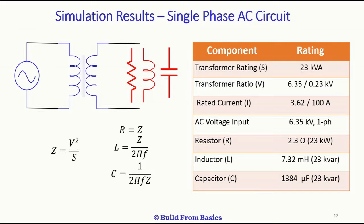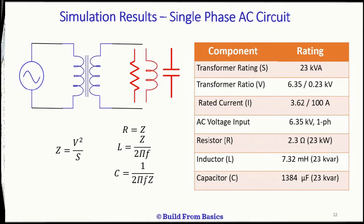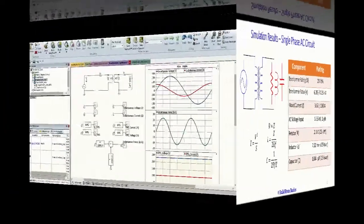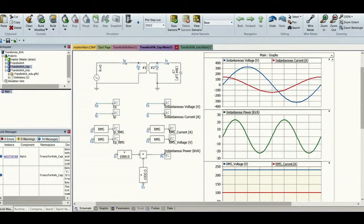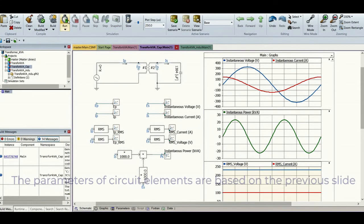The impedance Z = V²/S, where V = 230 V and S = 23 kVA. Then R = Z, L = Z / (2πf), and C = 1 / (2πfZ). Using these formulas we get the required values. Now let's run the simulations. The right-side graph shows the results.